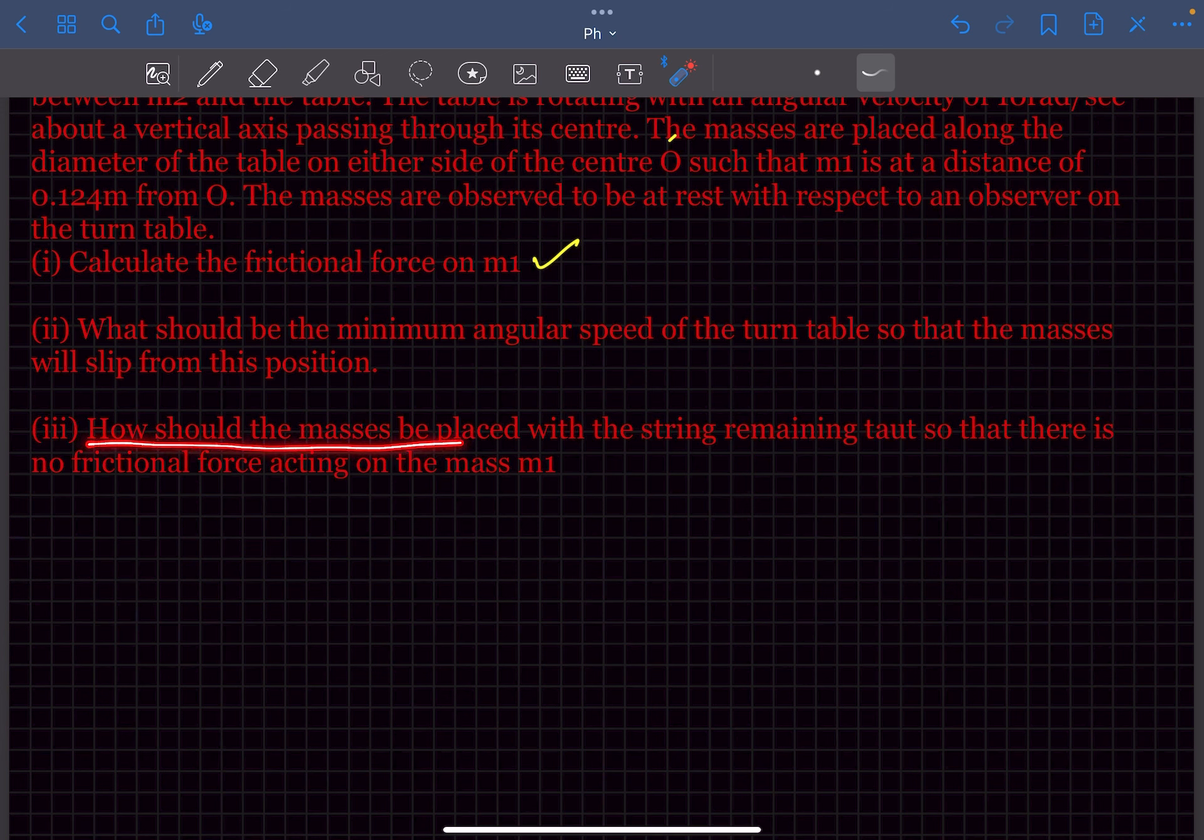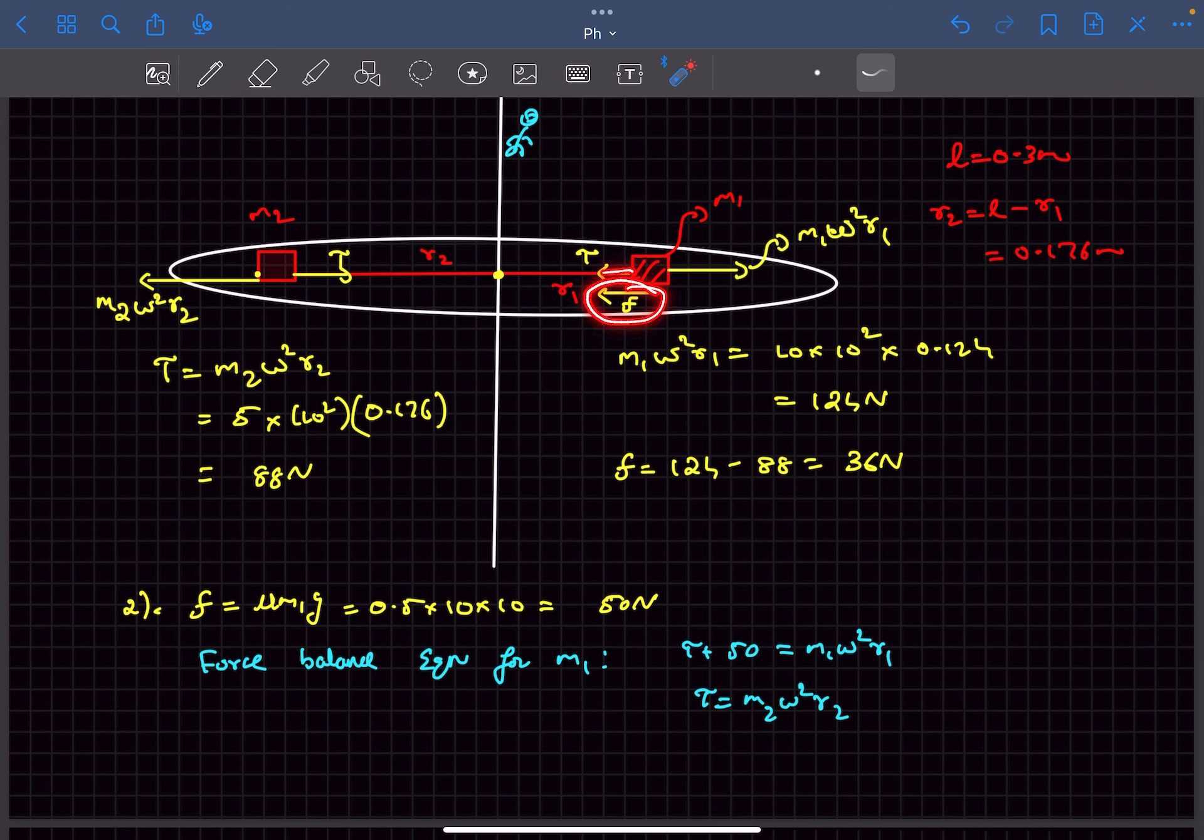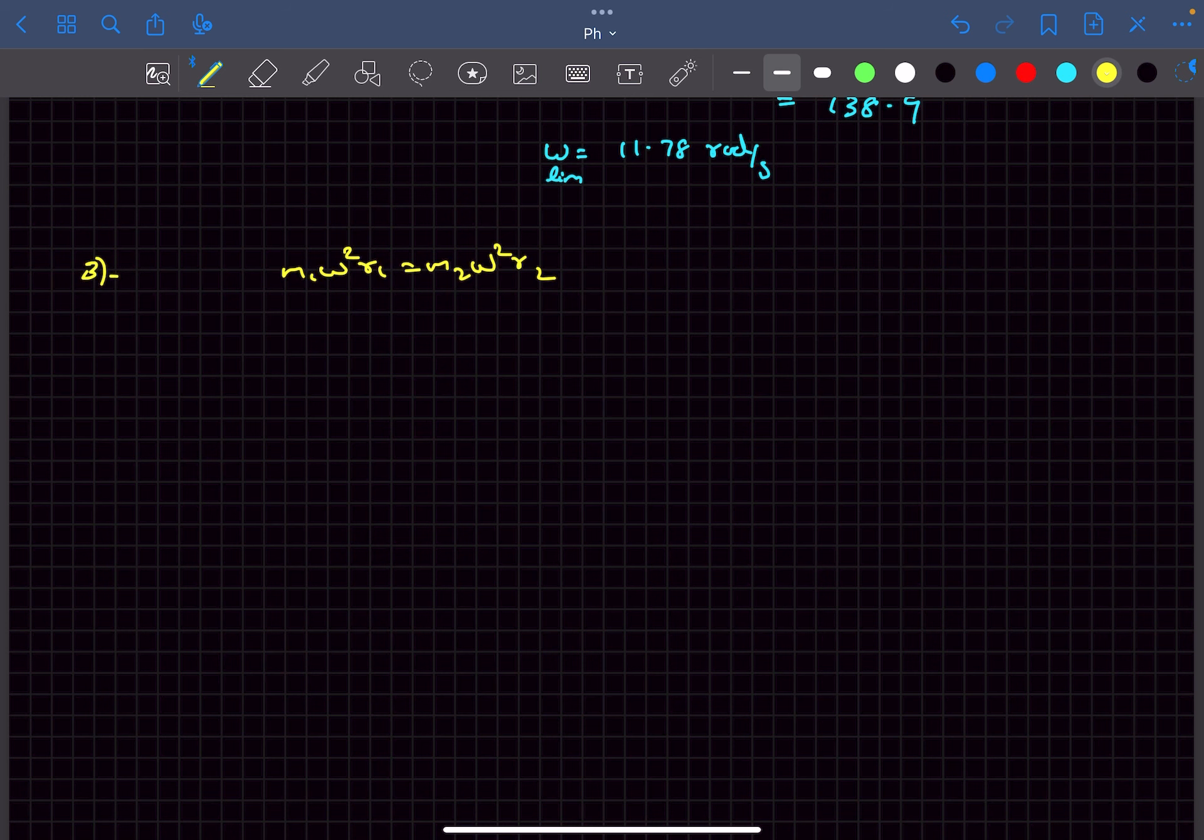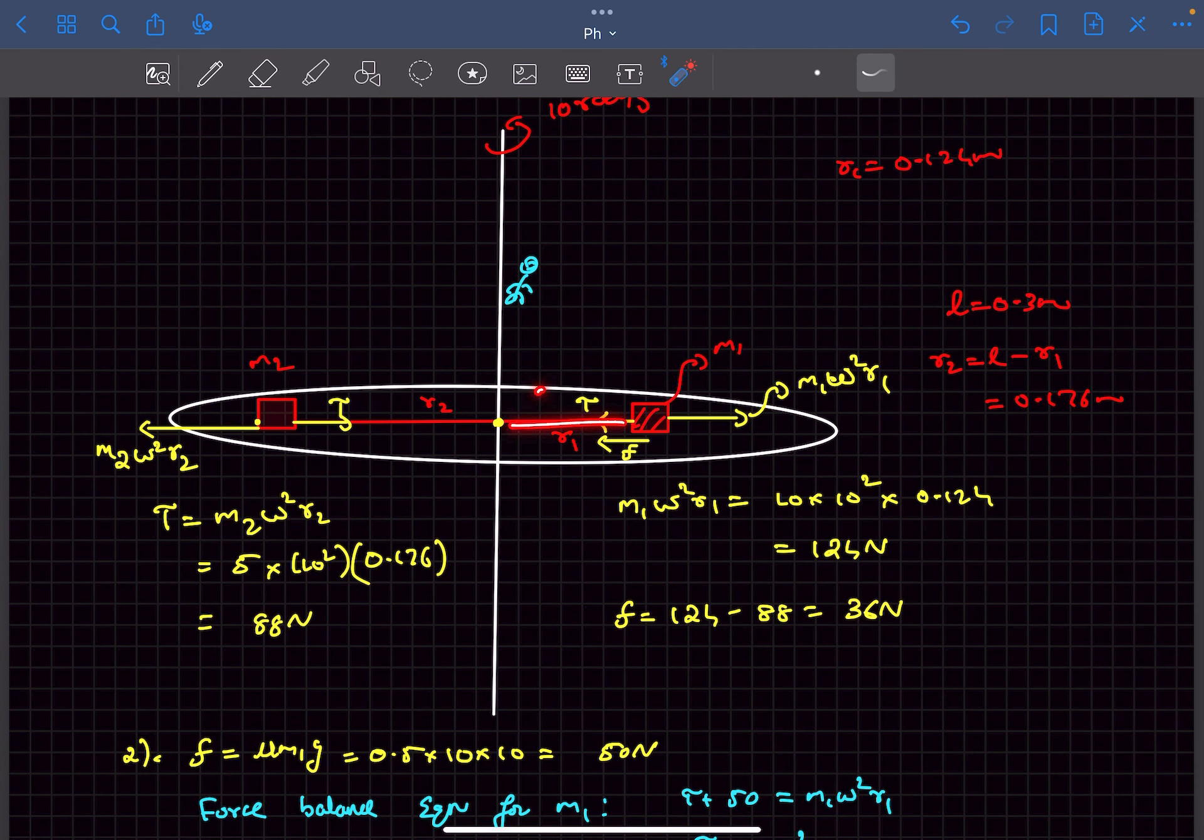So in problem number three they're asking how should the masses be placed with the string remaining taut so that there is no frictional force acting on mass m1. So if the friction force is zero then the tension T would be equal to m1 omega square r1 and also we know that tension T is equal to m2 omega square r2. So basically we can equate these two centrifugal forces and from here we'll get r1 divided by r2 as m2 divided by m1 and writing r1 as 0.3 minus r2. So from here we'll get the value of r2 as 0.2 meters which means r1 must be 0.1 meters. So the mass m1 has to be kept at a distance of 0.1 meter from the axis and the mass m2 has to be kept at a distance of 0.2 meters from the axis so as to make sure that the friction force is zero.